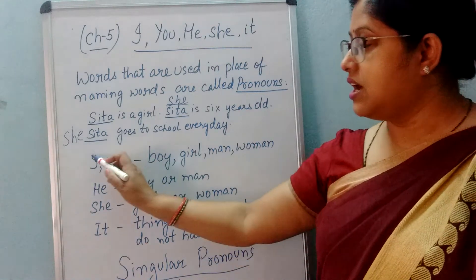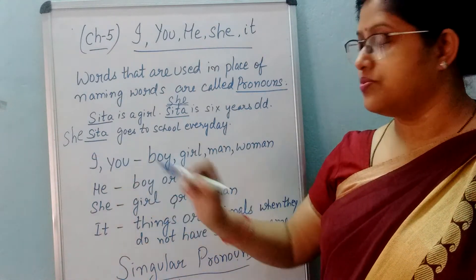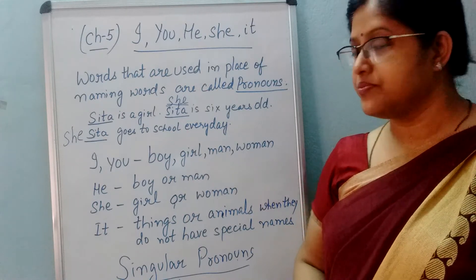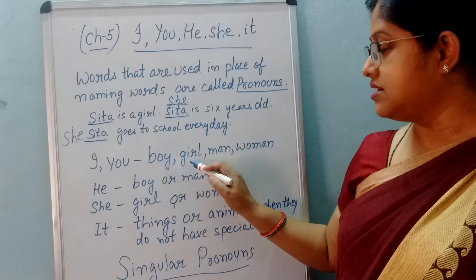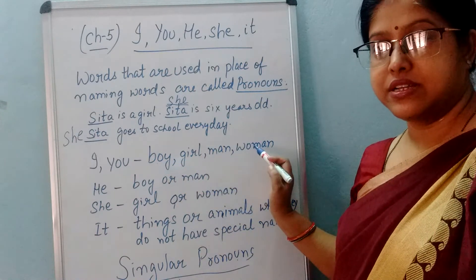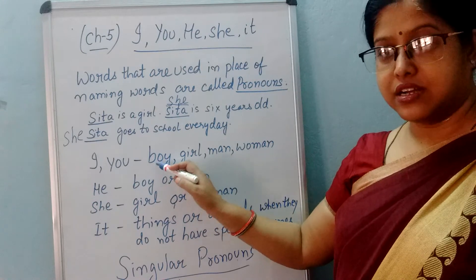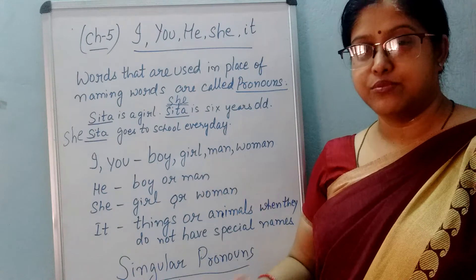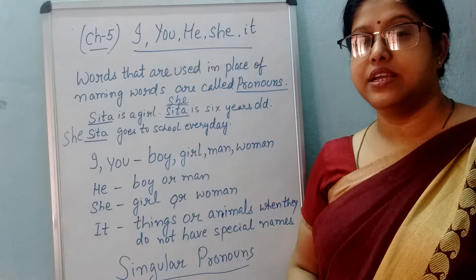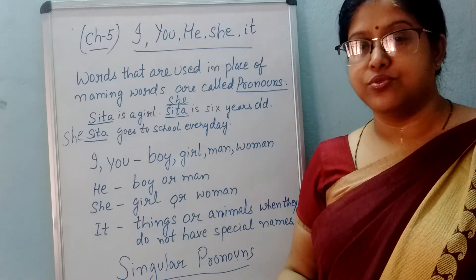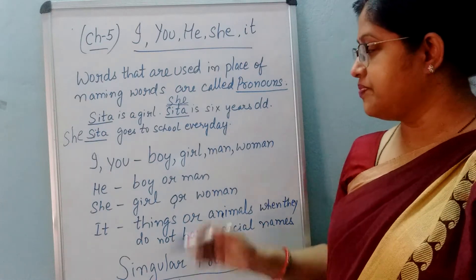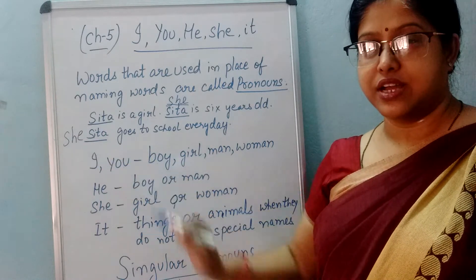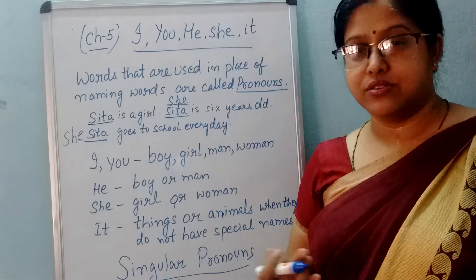Now we will learn about I and you. I and you kya hai? It is a pronoun. And where is it used? It is used for boy, girl, man or woman. Agar kisi ladke ke liye kuch bolna hai, to you use hota hai. I bhi use hota hai — agar hum ladki hoon, to apne liye I use karengi, aur aapke liye you. I apne liye bola jata hai aur you dusron ke liye.